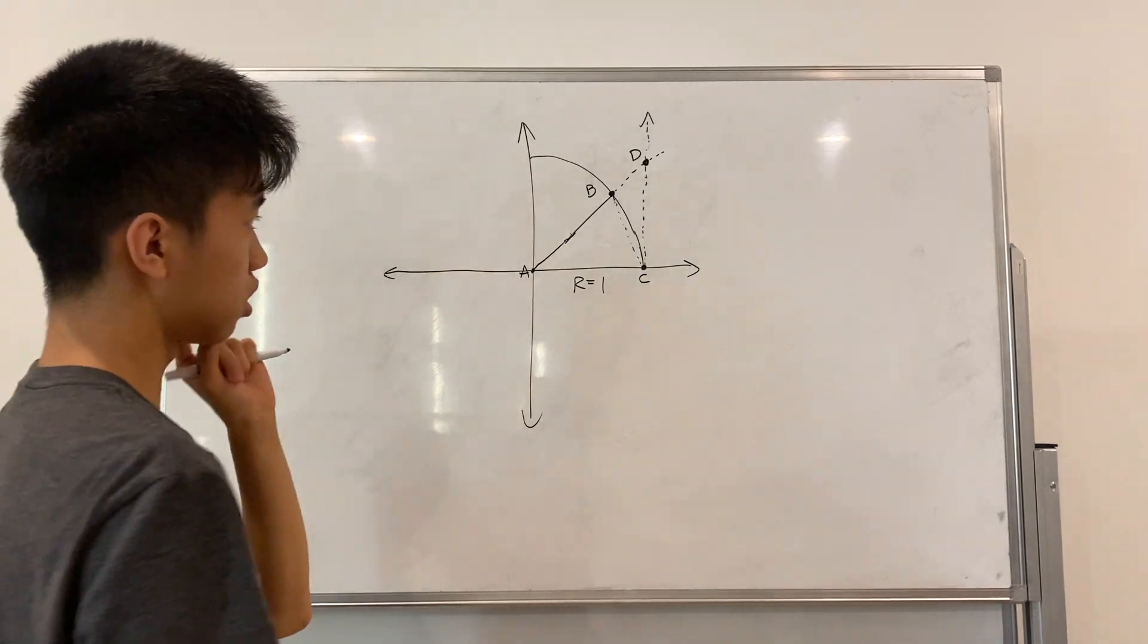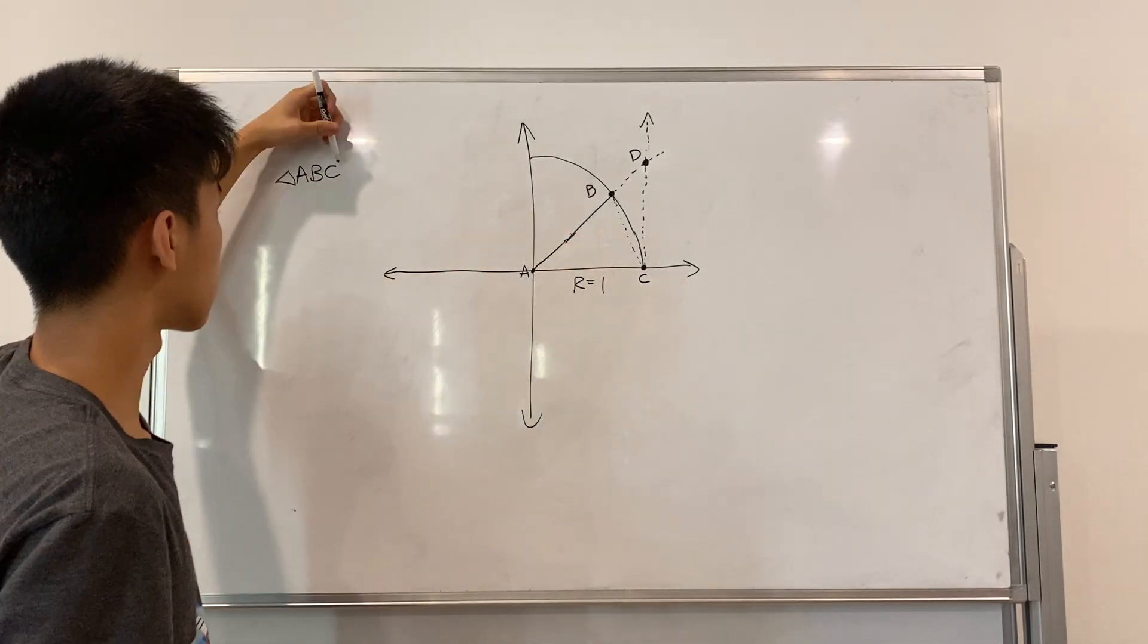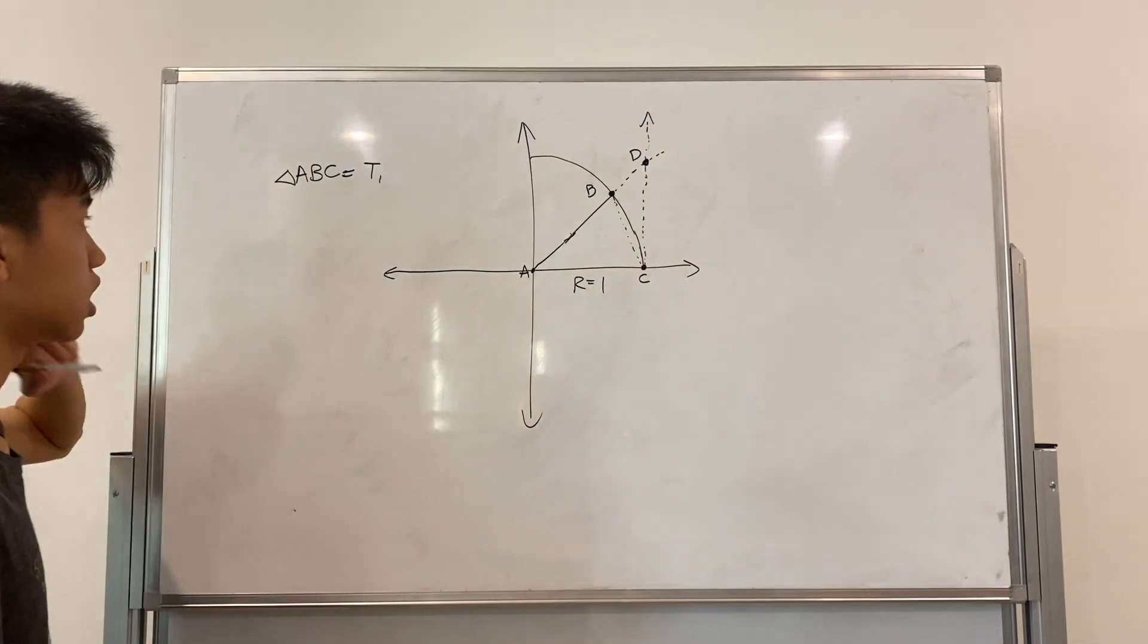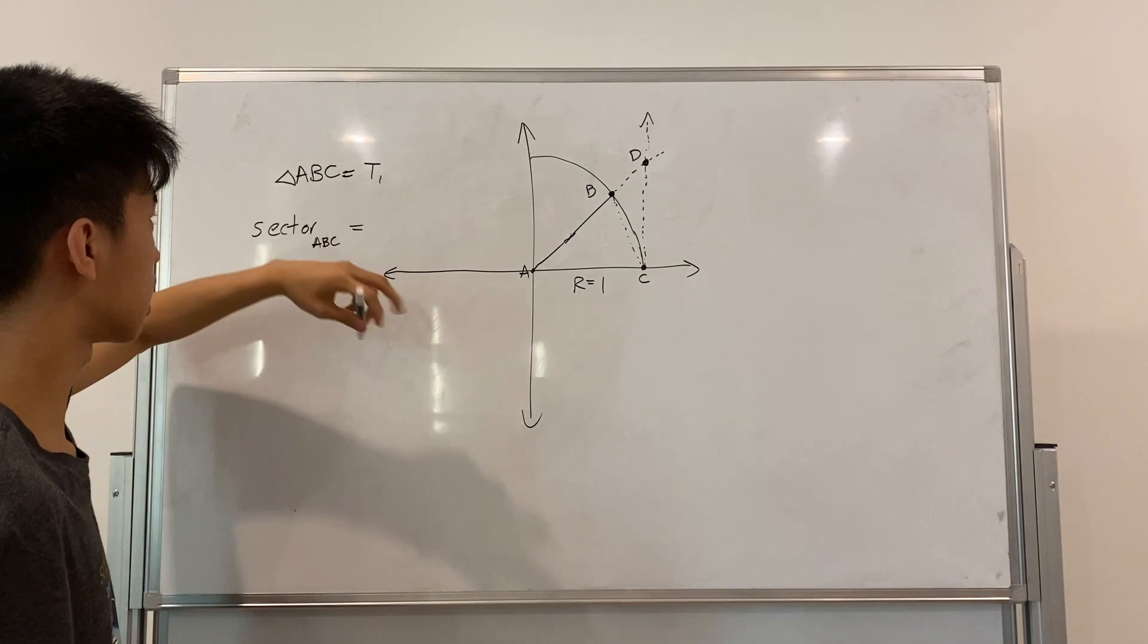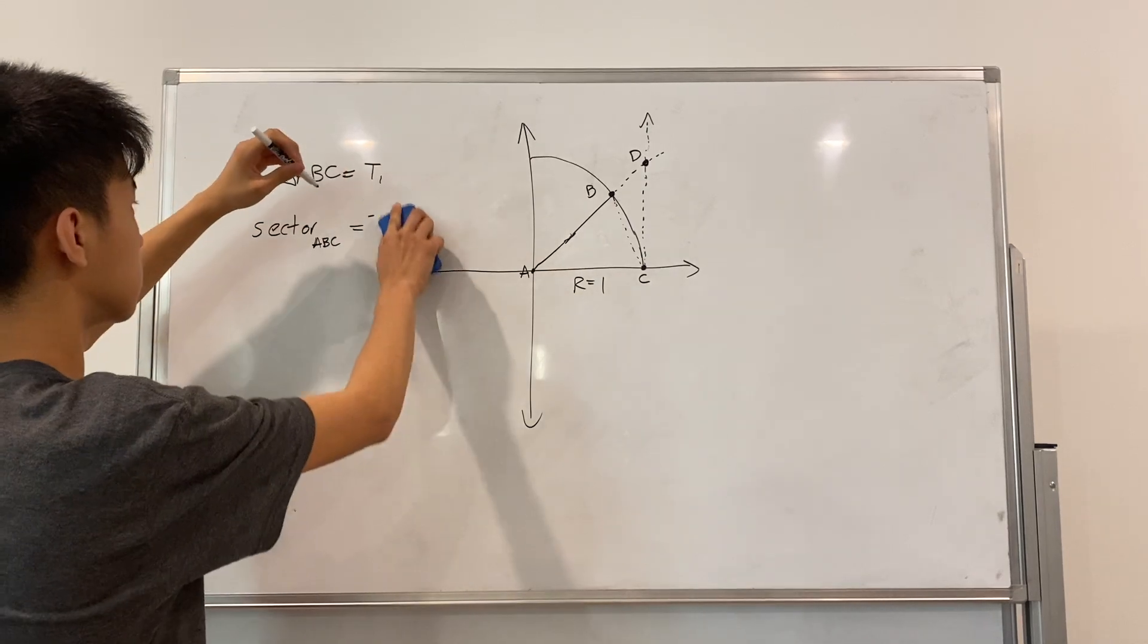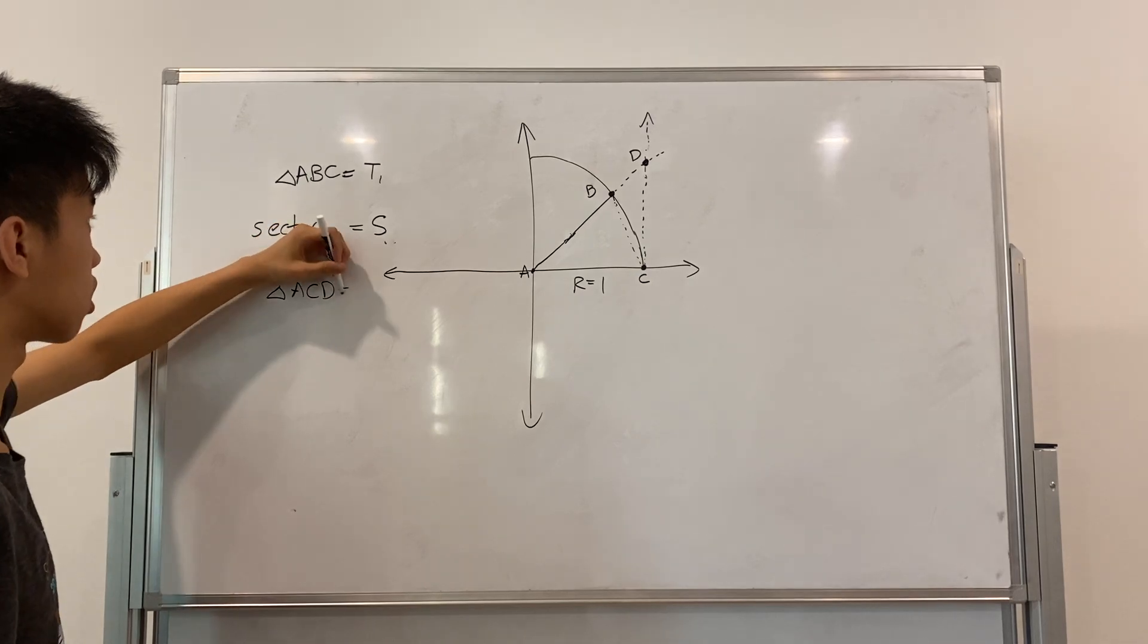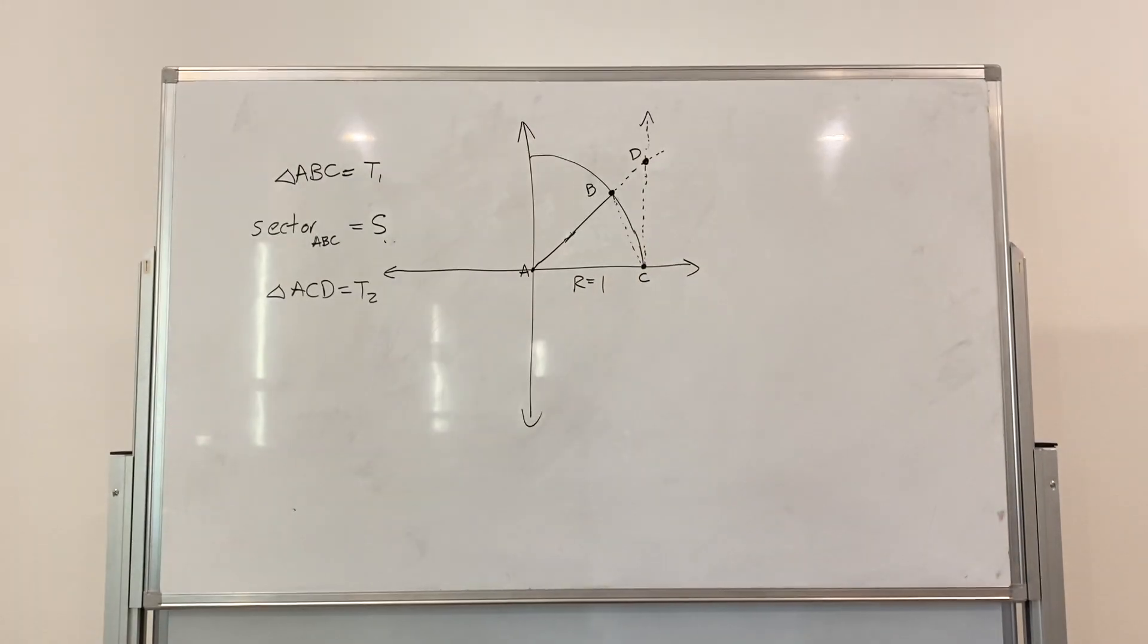So let's call the triangle ABC, triangle 1. Then we can call the sector ABC, I'll just call it T2, why not, even though it's not a triangle. I'll just call it sector. And then the triangle ACD, I'll call that triangle 2.